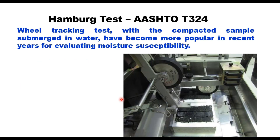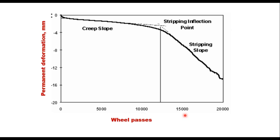The Hamburg test, given in AASHTO T324, uses a field tracking test with compacted samples submerged in water, which has become more popular in recent years for evaluating moisture sensitivity. This test evaluates rutting and moisture sensitivity in asphalt mixes by using a steel wheel that repeatedly tracks a specimen under water at a specified temperature, generally 40 to 60 degrees Celsius. During the test, specimen deformation is recorded as a function of the number of loading cycles. The stripping slope and stripping inflection point are considered indicators of the susceptibility of the mixture to moisture damage.